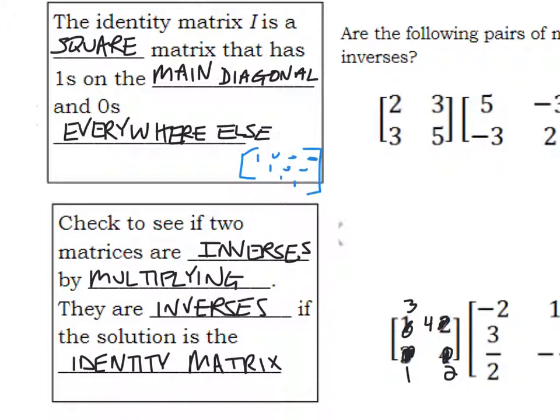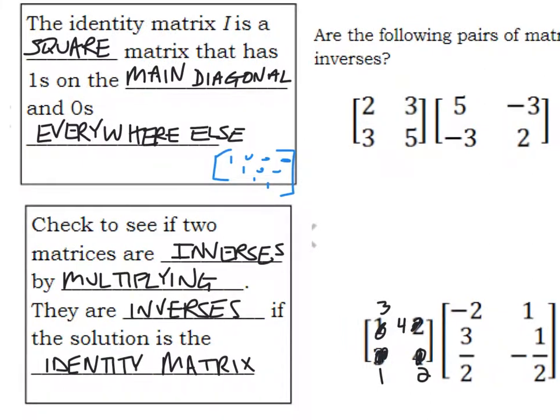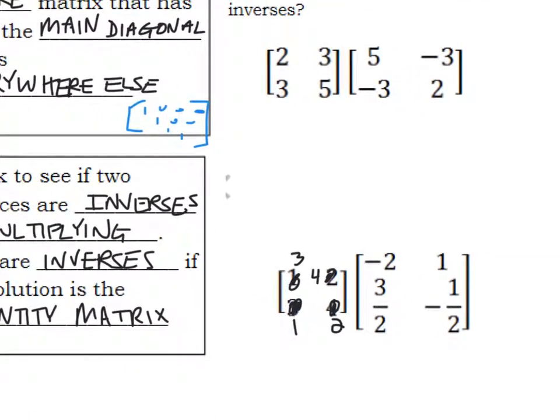You don't need to write the blue part. So if we want to check and see if two matrices are inverses, we're going to multiply them. They are inverses if the solution is the identity matrix. So if you open your flap, you're going to see these two problems. Because of space, I'm going to cheat a little bit and just move down my matrix here and draw my grid.